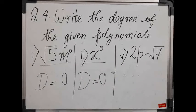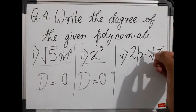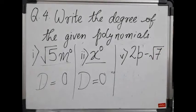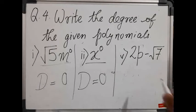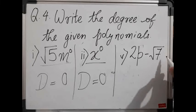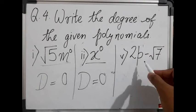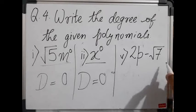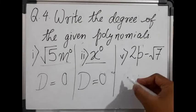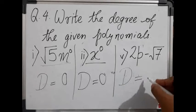Moving on to the next problem, question number 5, that is 2p minus √7. Here, nothing is written but it is understood that it is p raised to 1. There are two terms but here there is no variable, or if there is, it will be raised to 0, and here p raised to 1. So the highest power is 1, and the degree is 1.